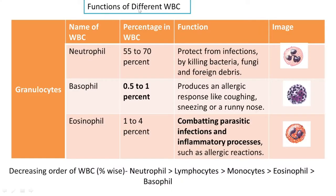Next we are going to see the different functions and importance of different types of WBC. Starting with granulocytes — neutrophil, eosinophil, and basophil. Taking the case of neutrophil first: it accounts for 55 to 70 percent of the total WBC. Its function is to protect our body from infections and to kill bacteria, fungi, and foreign debris. Its appearance — a neutrophil has more than two lobes; here it is shown with three lobes, and sometimes it has four or more.